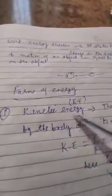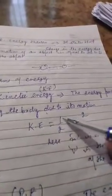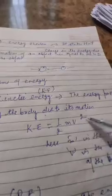The first type of energy is kinetic energy and it is represented with K.E. The energy possessed by the body due to its motion is known as kinetic energy. Mathematically, kinetic energy equals 1/2 mv². Here M is the mass, V is the velocity of the body.